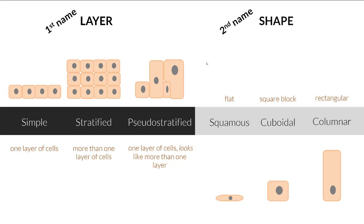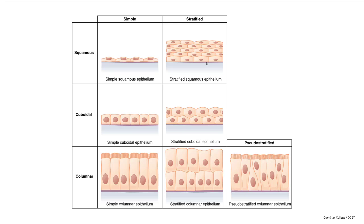The second name is about its shape. Squamous means it's flat like a tile — a piece of flat tile for your kitchen. Cuboidal would be like a square building block, and columnar would be more like a brick. We can see the categorization — whether you have simple, which is one layer, or stratified, which is more than one layer. From the shape perspective, is it squamous — one layer of flat cells or a stacked layer? Cuboidal cells — is it one layer or more than one? That's how they're named.